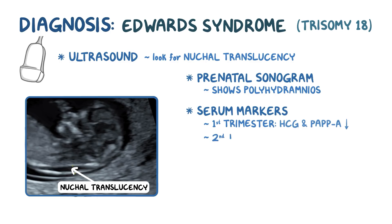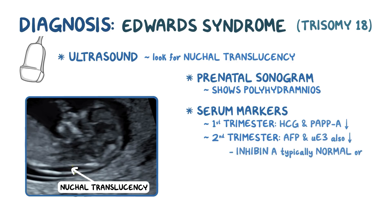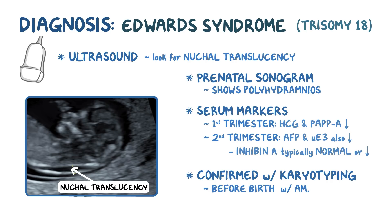During the second trimester, alpha-fetoprotein, or AFP, and unconjugated estriol, or UE3, also decrease. But another serum marker, inhibin A, is typically normal or slightly decreased. Diagnosis can be confirmed with karyotyping, which visualizes each chromosome. A karyotype can be done before birth with an amniocentesis, or at any time after birth with a blood test.